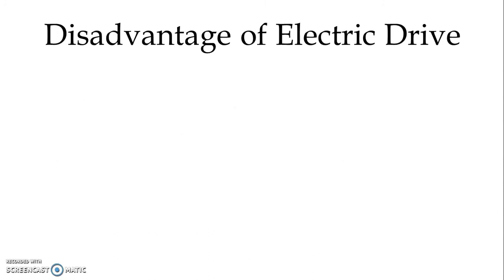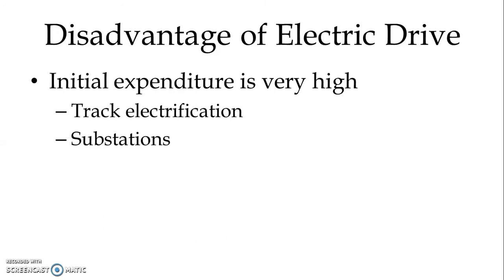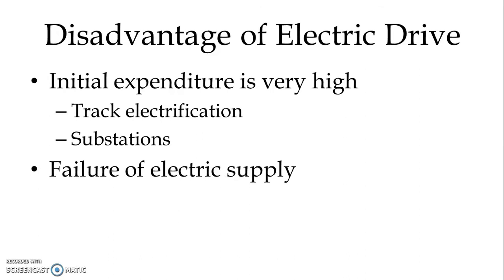Now let us see certain disadvantages. The initial expenditure is very high, especially for track electrification — it requires a very high capital investment and to prepare substations at different definite intervals. Failure of electric supply, even for a couple of minutes, can create a very high discrepancy.